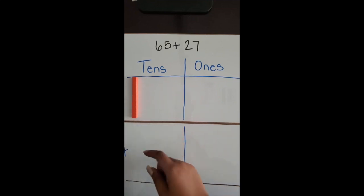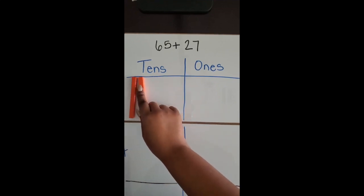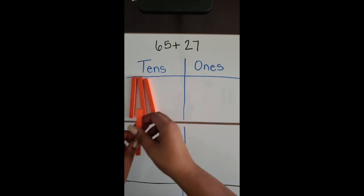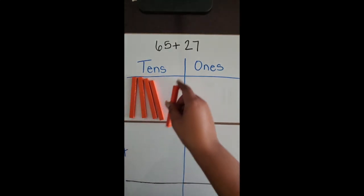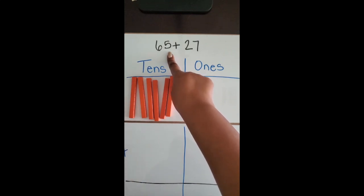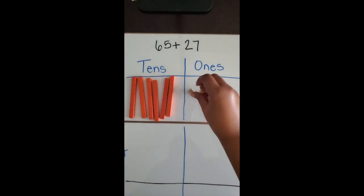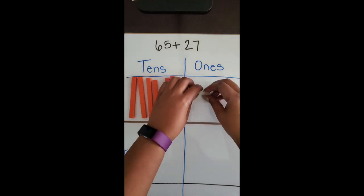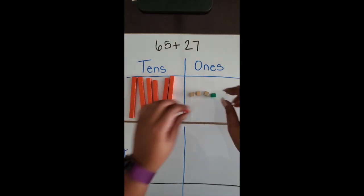Each one of these 10 rods represents a 10, so 10, 20, 30, 40, 50, 60, and then we're going to build out five ones: 1, 2, 3, 4, 5.